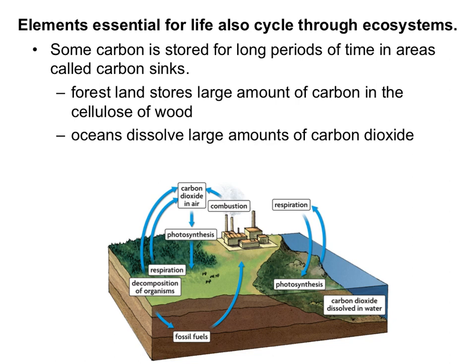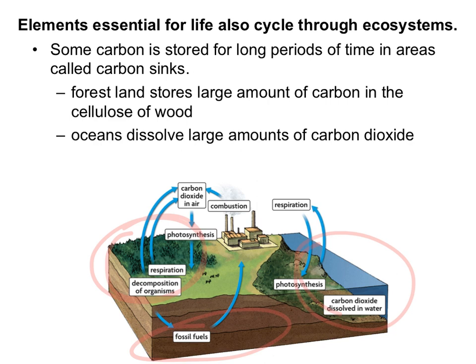Some carbon is stored for long periods in areas called carbon sinks. Forest land stores large amounts of carbon in the cellulose of wood, oceans can dissolve a lot of carbon dioxide, and fossil fuels store a lot of carbon underground. One reason we talk about sinks is that these stored reserves weren't really moving through the cycle — but as we do things like deforestation or burning of fossil fuels, we're releasing far more carbon dioxide into the air than in the past, because these were previously locked in sinks.